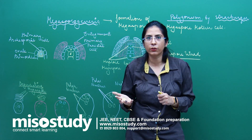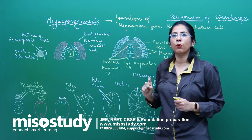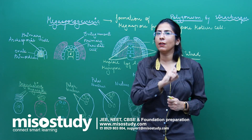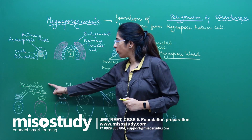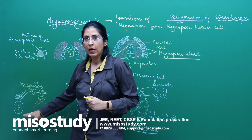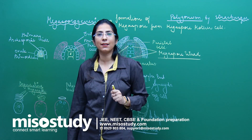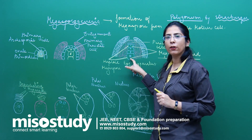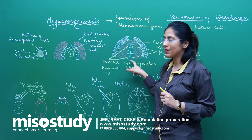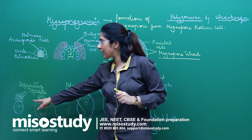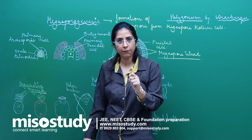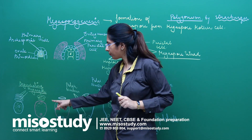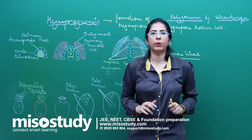Now basically there is the formation of ovules. Out of these 4 Megaspores, three of them degenerate — only one remains functional. The cell which is present at the Chalazal end, which is away from the Micropylar end, is that fourth cell. This particular cell at the Chalazal end keeps on dividing and remains functional, whereas the rest of the three degenerate.